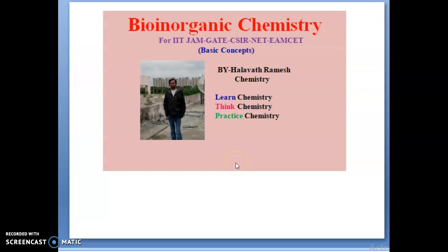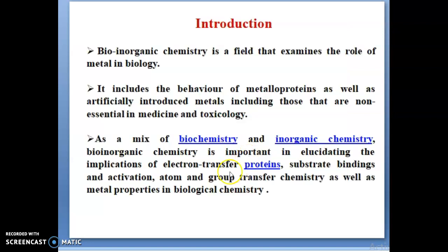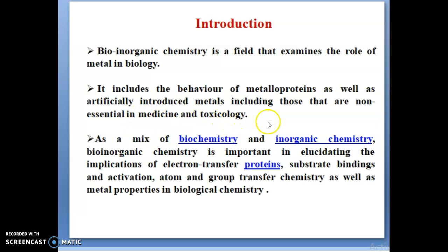Let us go to our class. You can see the first slide: what is bio-inorganic chemistry? Bio-inorganic chemistry is one interdisciplinary subject. This field examines the role of metals in biology — how metals function in biology. It includes the behavior of metal proteins as well as artificially introduced metals, including those that are non-essential, in medicinal toxicology. As a mix of biochemistry and inorganic chemistry, bio-inorganic chemistry is important in studying the application of electron transfer proteins.